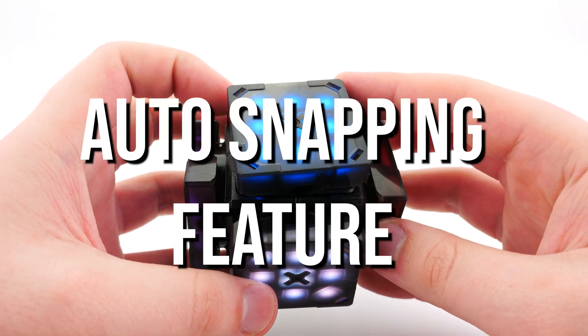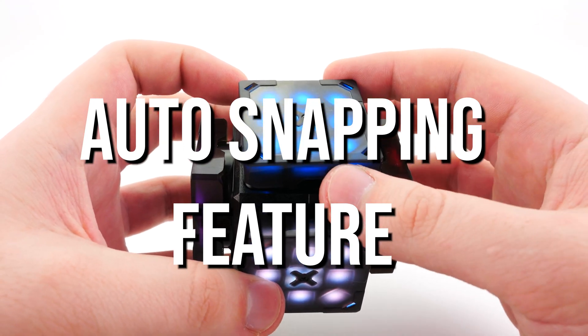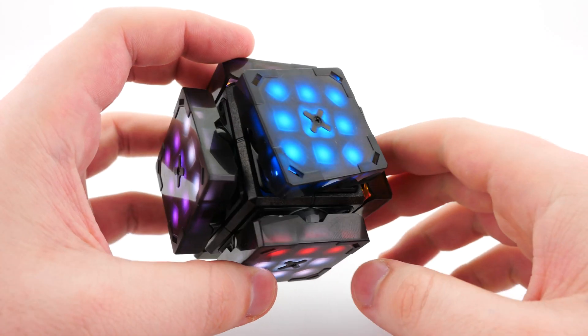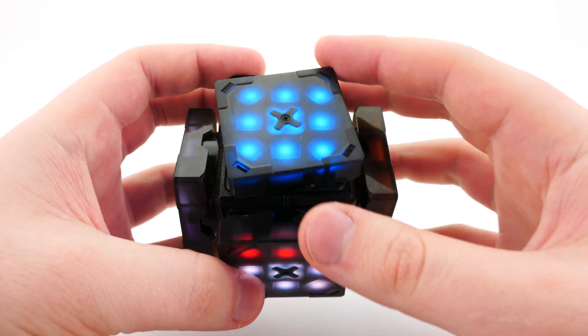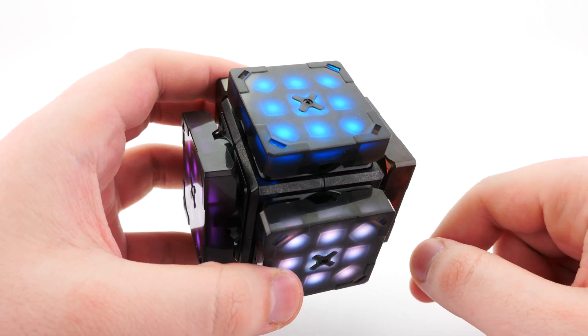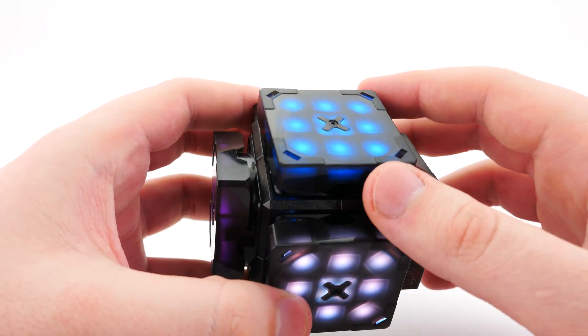Another thing I really like about the Cube is the auto snapping function. So the way that works is if you turn a face just a little bit, eventually, as you can see, it snaps and completes the turn for you. Now, if you don't like this function, you can turn it off, and you can also adjust the sensitivity on it, but I think that makes it a lot more enjoyable to use.